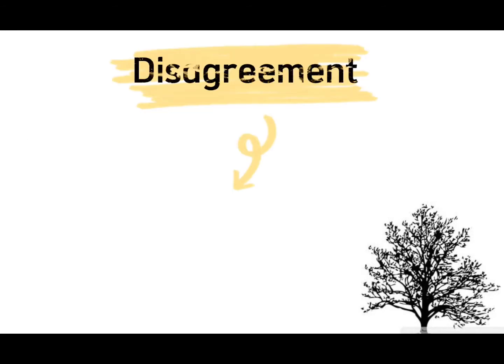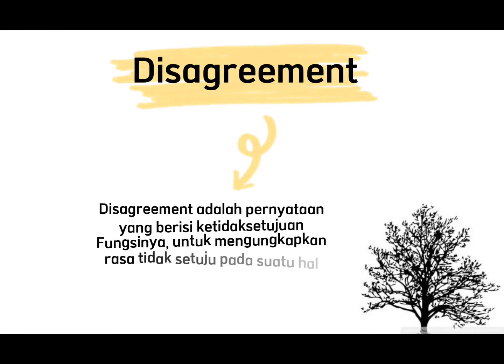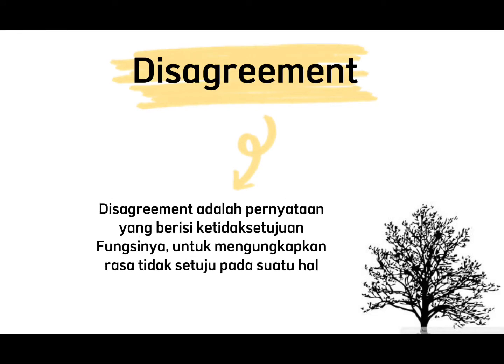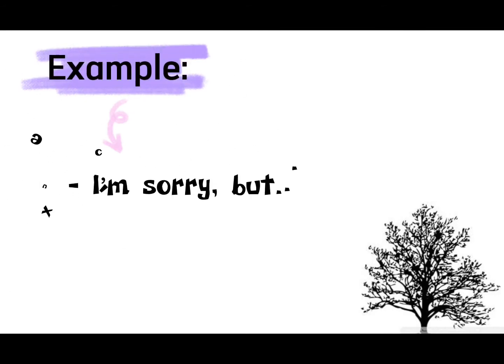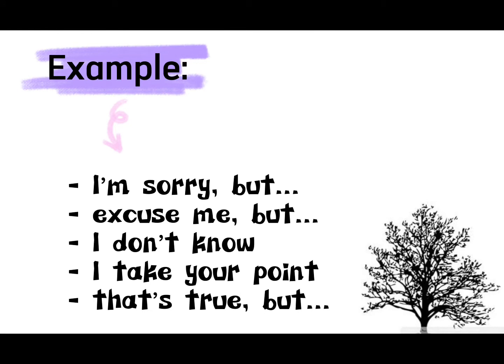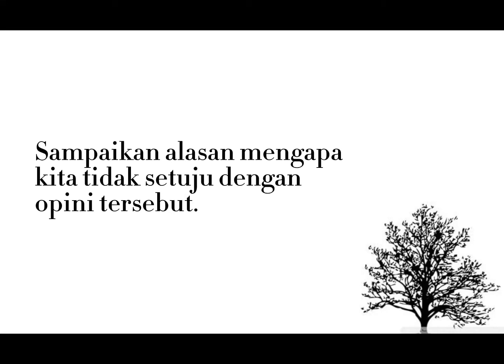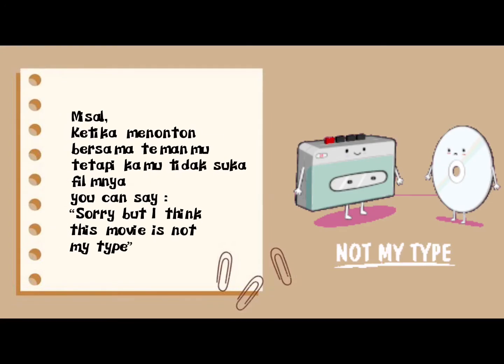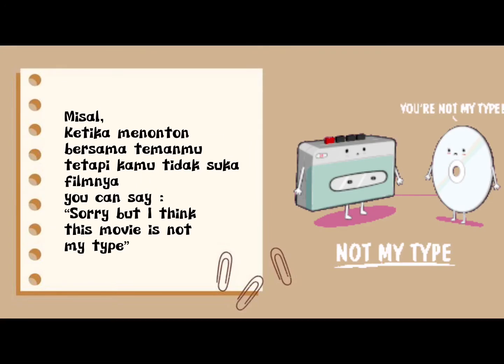Lalu ada disagreement. Disagreement adalah pernyataan yang berisi ketidaksetujuan, fungsinya untuk mengungkapkan rasa tidak setuju pada suatu hal. Contohnya: I'm sorry but, excuse me but, I don't know, I take your point, that's true but. Ada baiknya kita sampaikan alasan mengapa kita tidak setuju dengan opini tersebut.